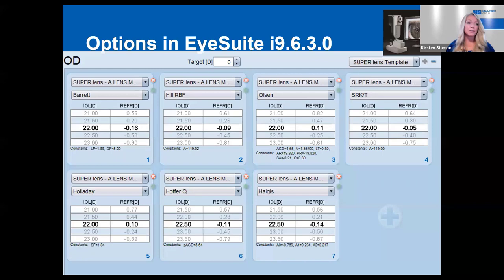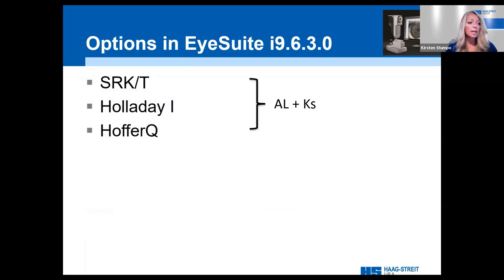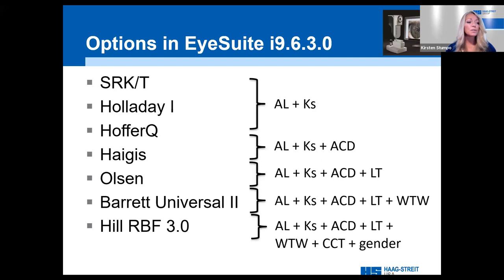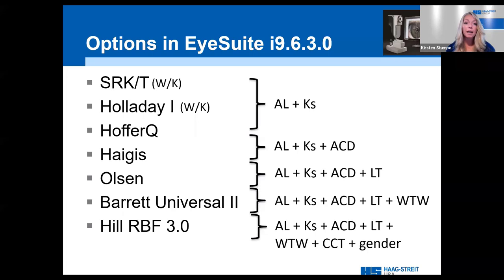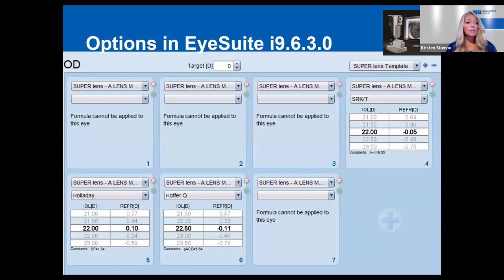With iSuite, you have many formulas to utilize. Standard formulas requiring only axial length and K's are the SRKT, Holliday 1, and Hoffer Q. You also have newer multi-variable methods: Haigis, Olsen, Barrett Universal 2, and Hill RBF — these require at minimum axial length, K's, and anterior chamber depth measurements. In our most recent software version, we've also added the Wang-Koch adjustment for the SRKT and Holliday 1.